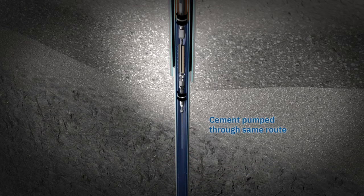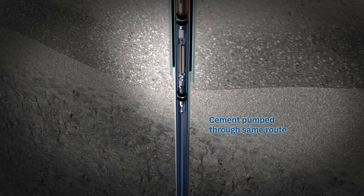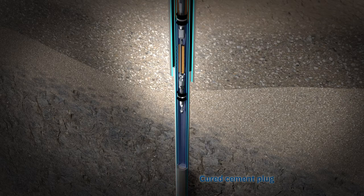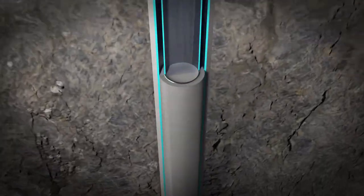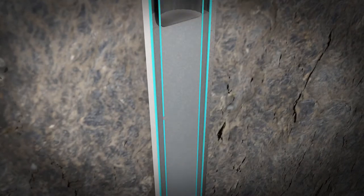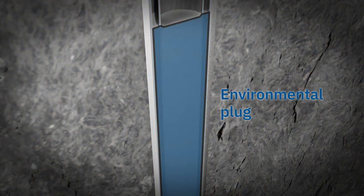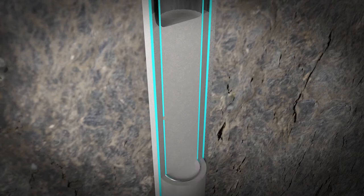Subsequently, a cement plug can be placed either by conventional or reverse circulation. The cement creates an environmental plug, preventing contaminated fluids from escaping to the environment when the wellhead is subsequently removed, returning the seabed to its natural state.